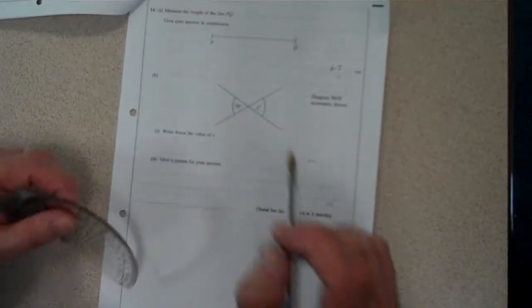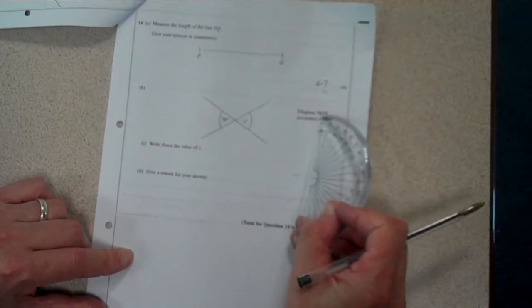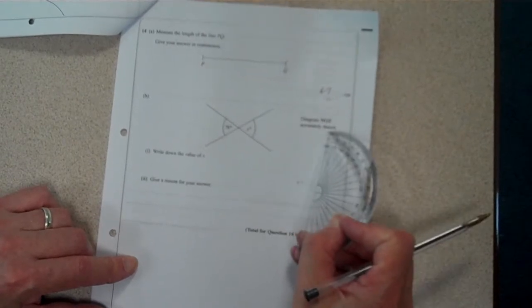And question B, you might be tempted to use a protractor to measure the angle here. If you miss this little piece of information here, because the diagram is not accurately drawn.